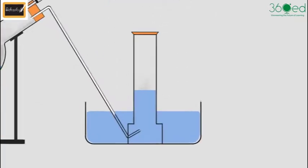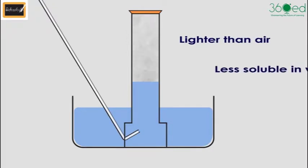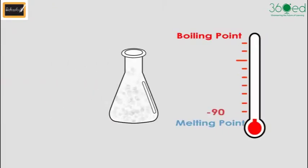Nitrogen is slightly less dense than air and only slightly soluble in water. Nitrogen gas condenses to a liquid at negative 196 degrees Celsius and freezes to a colorless solid at negative 210 degrees Celsius.